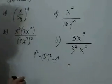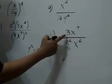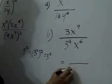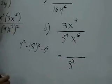We simplify this further. 3 divided by 3 to the 4th is 3 cubed in the denominator, or 1 over 3 cubed.